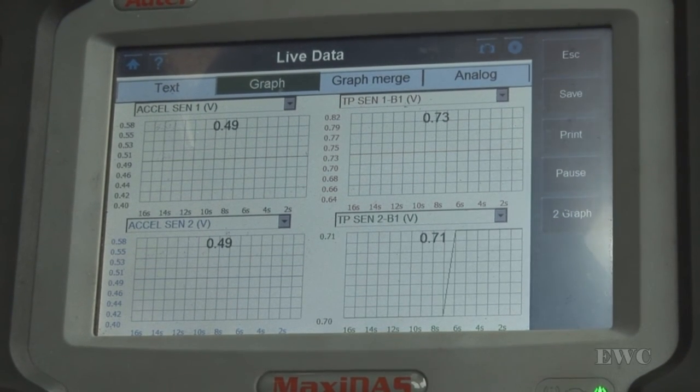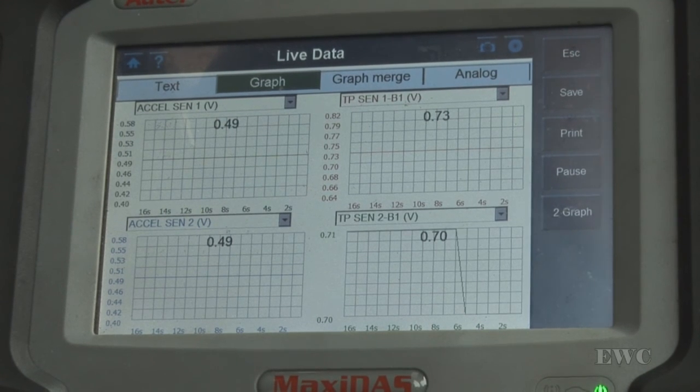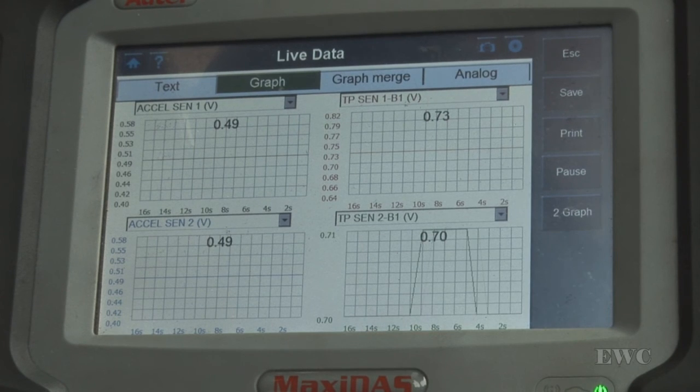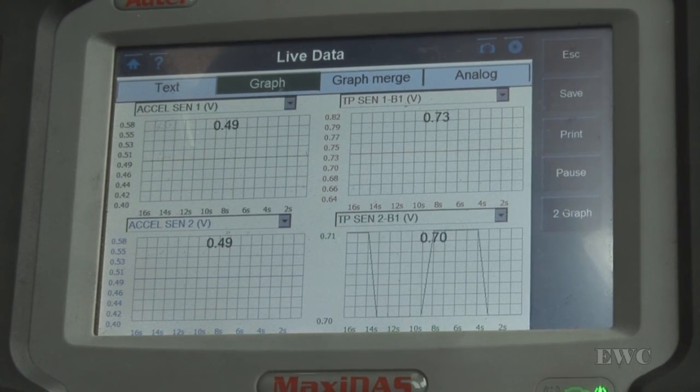The only way you can do a really good test of a TPS sensor is using an oscilloscope, because the time base on an oscilloscope is fast. It'll be fast enough to catch any fast glitches that a scan tool would not be able to catch.